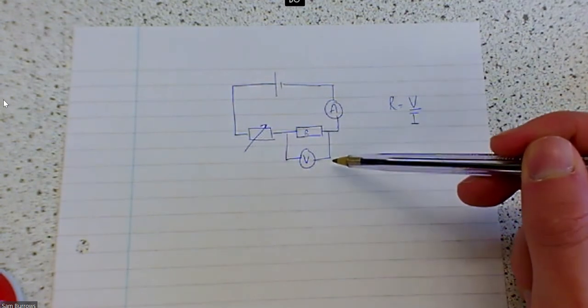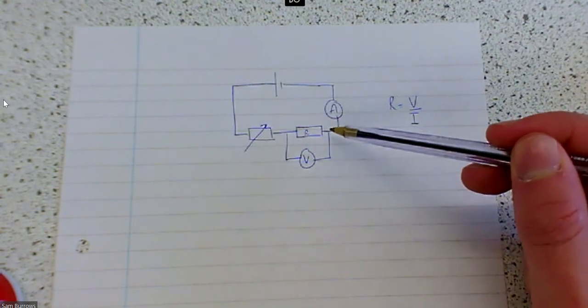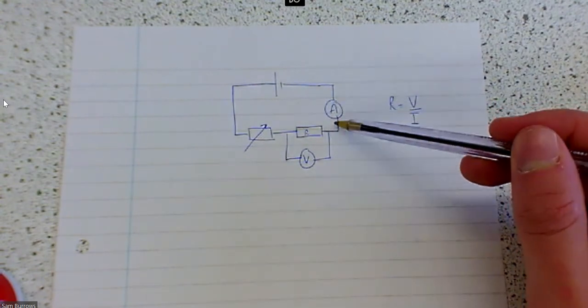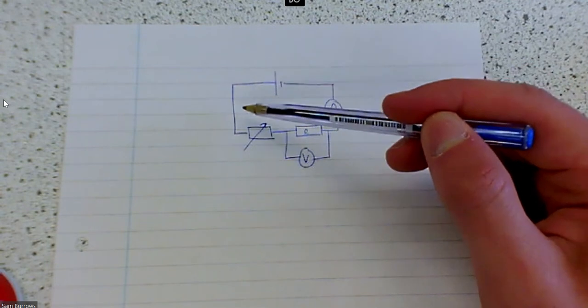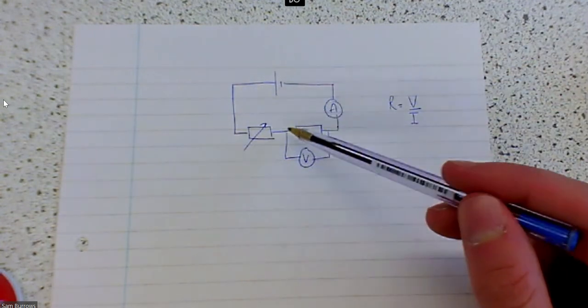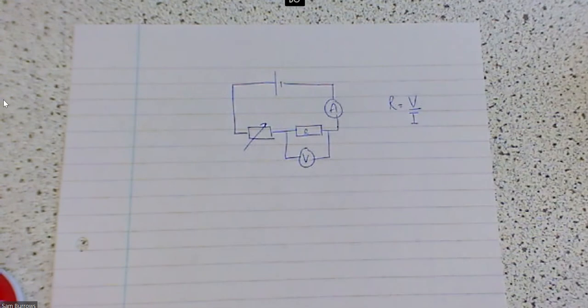So you can see we've got this voltmeter in here which will allow us to measure the potential difference across this resistor and we've got an ammeter in here that measures the current going through it. Now I could have put the ammeter over here, here, here, it doesn't matter because this is a series circuit so the current's the same everywhere anyway so I've decided to put the ammeter here.